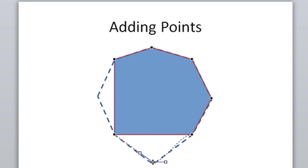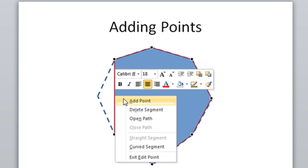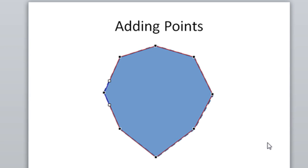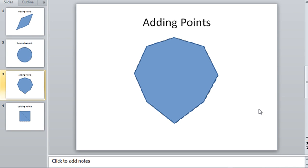So I'm just going to add a few more. Make that a straight segment. And move it just a little bit more. And add point. And click and drag. That's how you can add points to a shape.